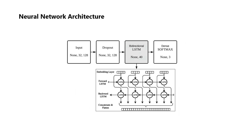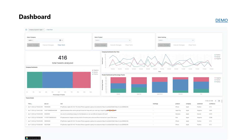The neural network architecture consists of an input layer, a dropout layer to avoid overfitting, a bi-directional LSTM, and then because we have three sentiments — positive, negative, and neutral — we deploy a three-unit softmax layer at the output to get the probability of every tweet belonging to every sentiment class.